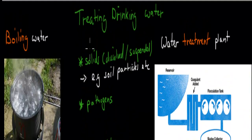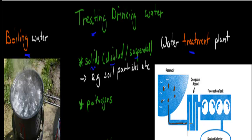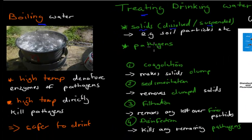There are two main ways to treat drinking water. We either boil it, or put it through a water treatment plant. Water from lakes or rivers might contain dissolved or suspended solid particles and pathogens that need to be removed before it enters our drinking supply. By boiling water, the high temperature will denature the enzymes of pathogens, thereby killing them, or may directly kill the pathogens. This makes the water safer to drink. Boiling water to kill microbes is often called pasteurization, because that technique was developed by Louis Pasteur.